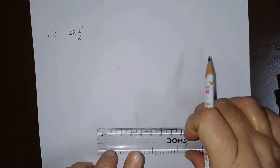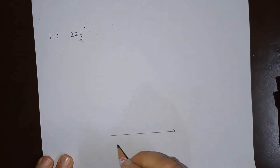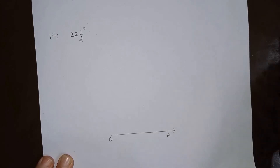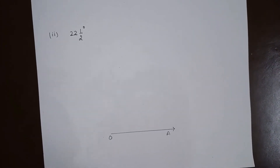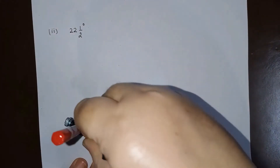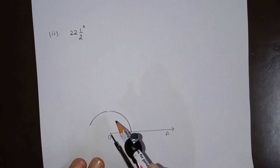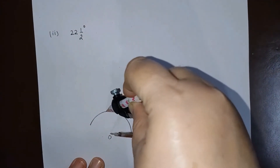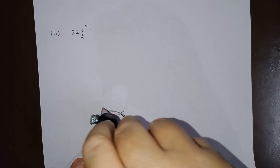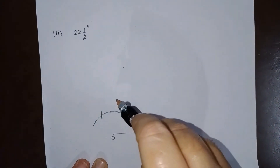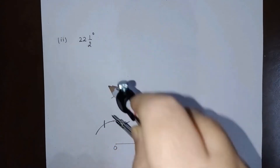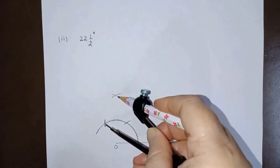We will make one ray — let this ray be OA. Taking our compass with a suitable radius and from point O, we will draw an arc of a circle. This is an arc. From this point this is an angle of 60 degrees, from this point this is an angle of 120 degrees, and from these two points if we draw two arcs of equal radius we will get an angle of 90 degrees.